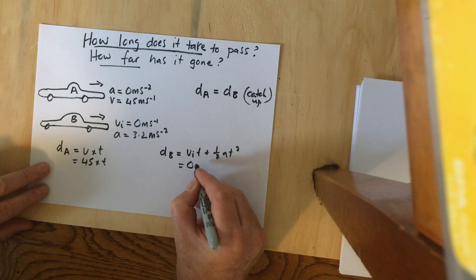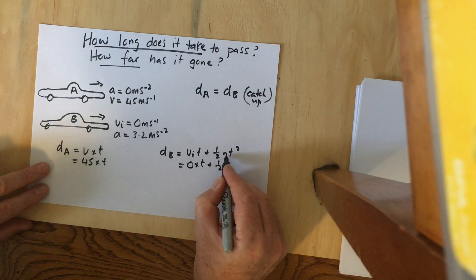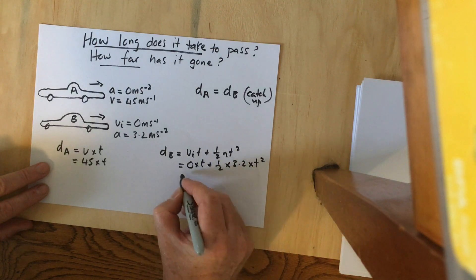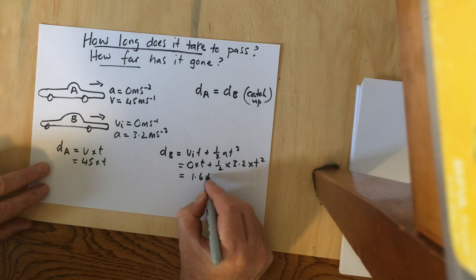So vi is 0 times t plus a half, and the acceleration is 3.2. We don't know the time yet. Simplifying these equations, we get 1.6*t squared.